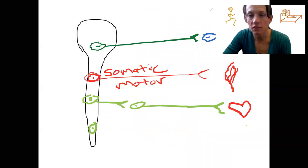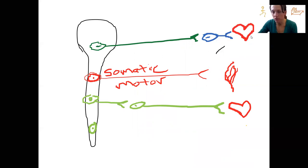What we're going to do here is dive into more detail comparing the two divisions of the autonomic nervous system.